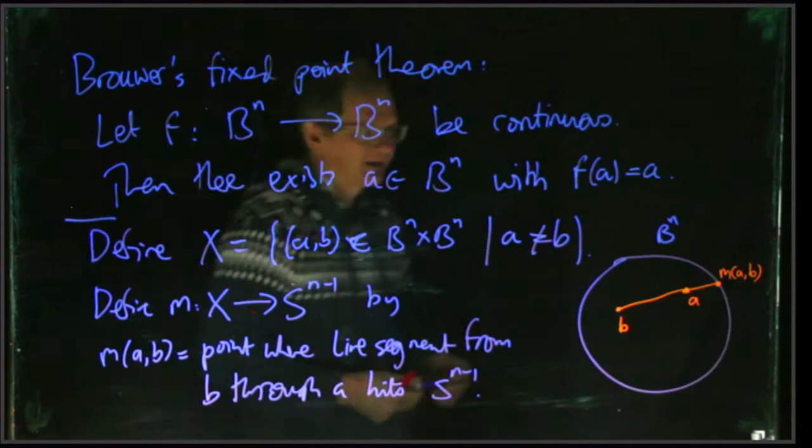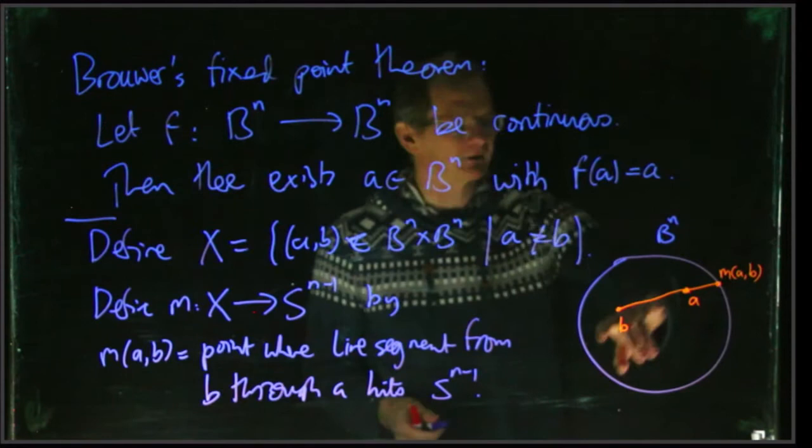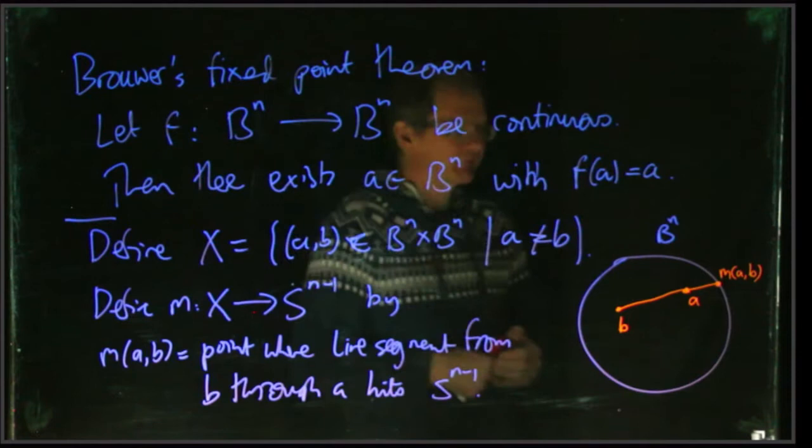So we're going to need to know that this m(a,b) is continuous. So this should be kind of intuitively plausible. You can kind of see if you just wiggle your a and your b a bit, then the point m(a,b) won't change very much. But we'll give a more formal proof of that in a second.